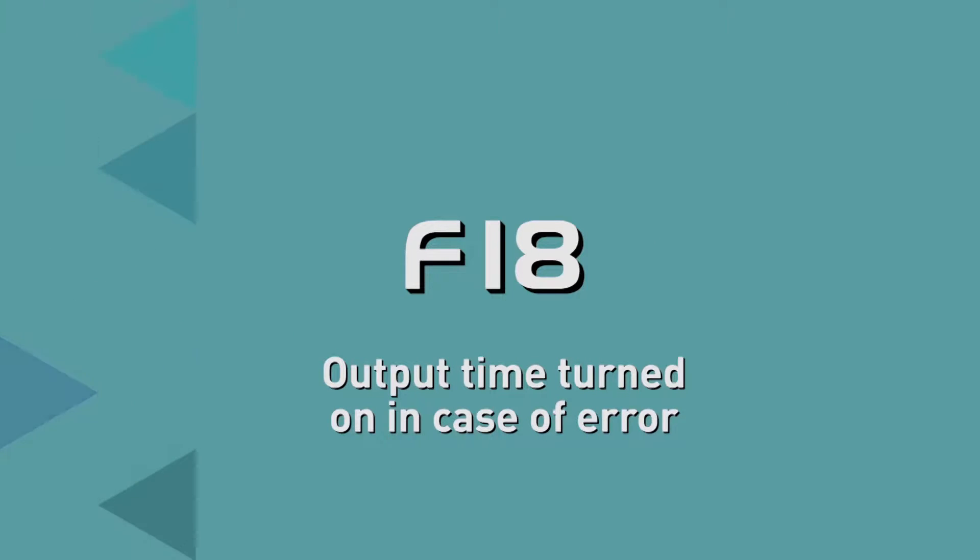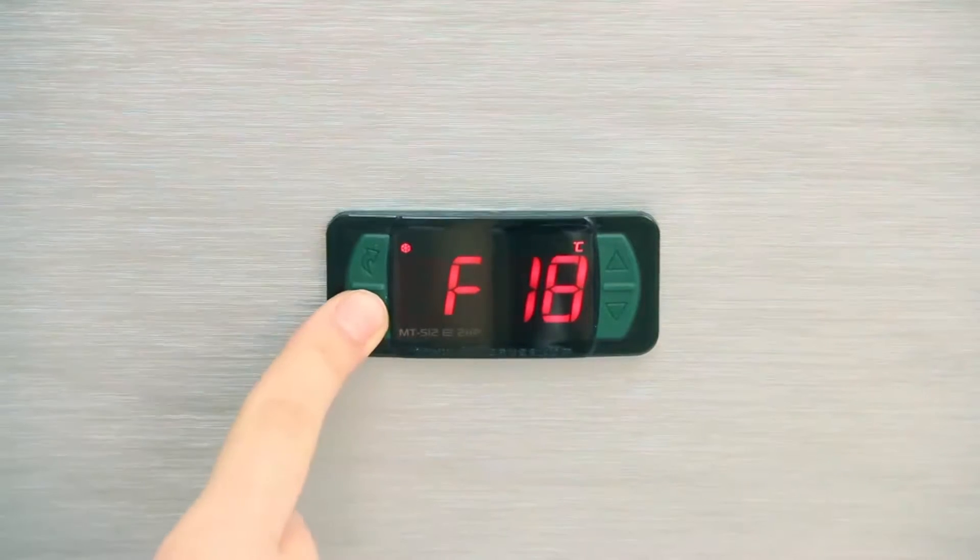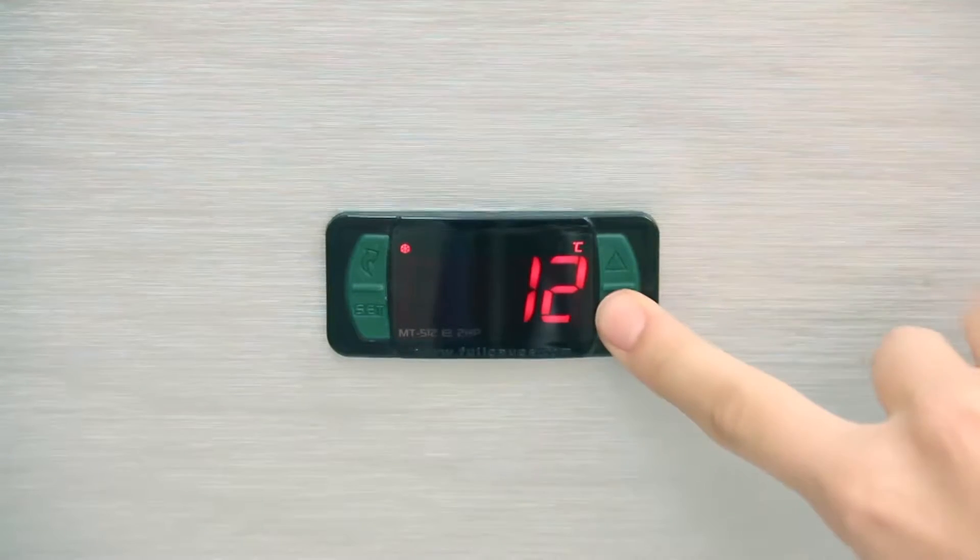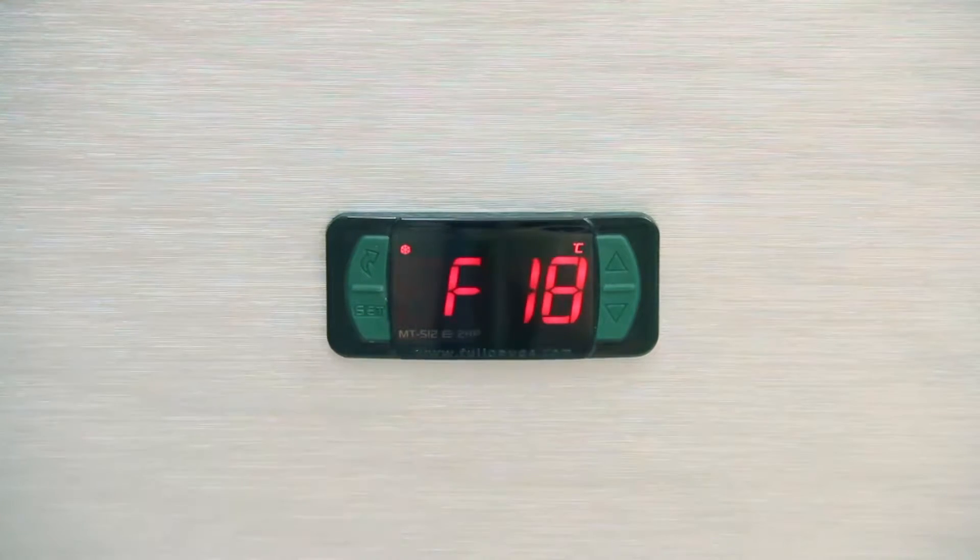F18, Output Time turned off in case of error. It sets the minimum time the compressor will stay off if the sensor is disconnected or out of the measurement range. In the example, we opted for an increase of 10 minutes.